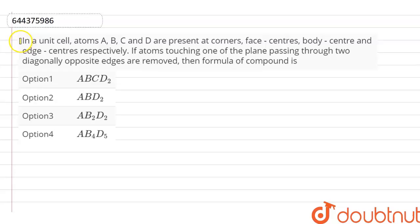Here is a question: In a unit cell, atoms A, B, C, and D are present at corner, face centers, body center, and edge centers respectively. If atoms touching one of the plane passing through two diagonally opposite edges are removed, then formula of compound is: